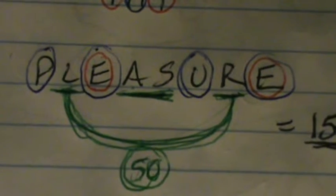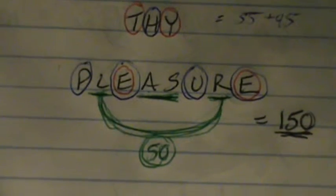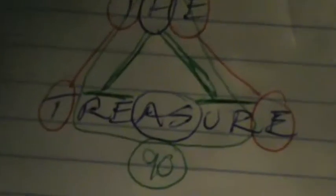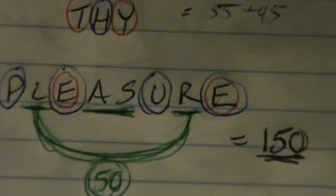So measure is 15 less than pleasure, which is 10 less than treasure. Well, what do they all have in common on the ending? Ezure.